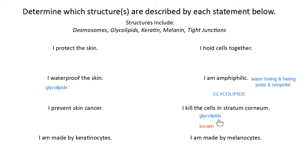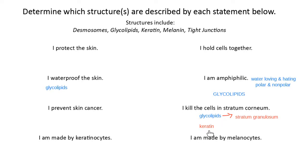Which stratum of the epidermis do I start making glycolipids? I start making glycolipids in stratum granulosum — that's where I first make them. It correlates with the fact that stratum granulosum is where cells start to die. Those cells get pushed up through stratum lucidum all the way into stratum corneum. Everybody above stratum granulosum is dead — dead because they can't get nutrients, and dead because they're full of keratin.